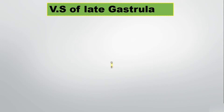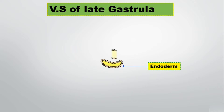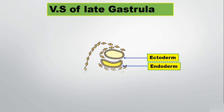Hello friends, let's look at the VS of late gastrula. Gastrula is formed during the process of gastrulation. In gastrulation, the first layer that is formed is endoderm. After endoderm, the next germ layer formed is known as ectoderm. And after ectoderm, the third layer that is formed is the mesoderm.